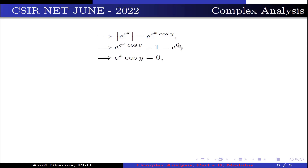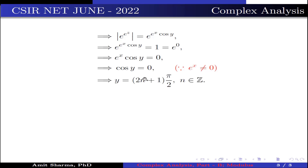On comparing, we get e^x · cos y is equal to 0. This further implies cos y equals 0, because the value of e^x cannot be 0 for any value of x. This implies y is equal to (2n+1)·pi/2, where n belongs to Z. Hence, option 4 is true.